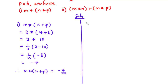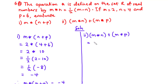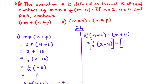Now let's solve for part (ii): (m star n) plus (m star p). Using the rule for the operation, we have half times (m minus n), so m is 2 and n is 4. Plus, also using the rule, we have 1 over 2 times (m is 2 minus p is 6).